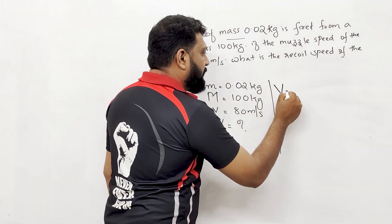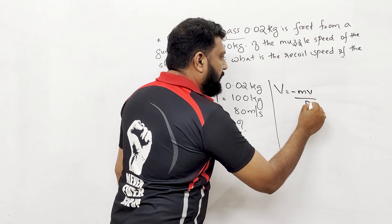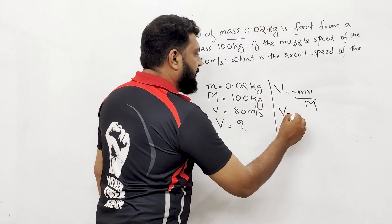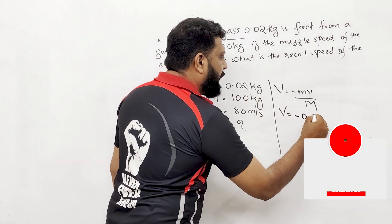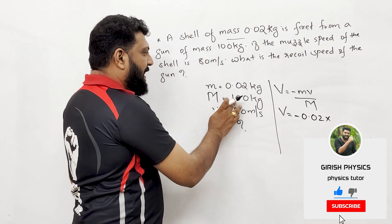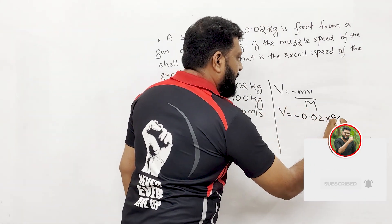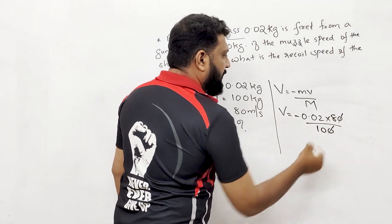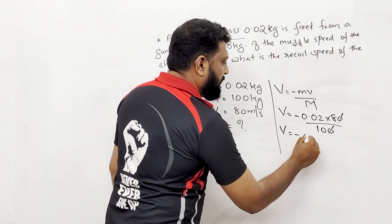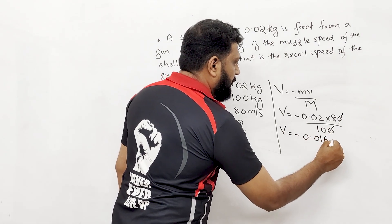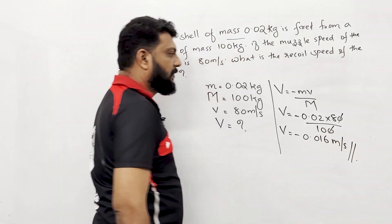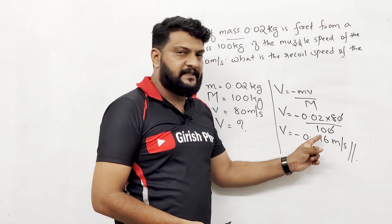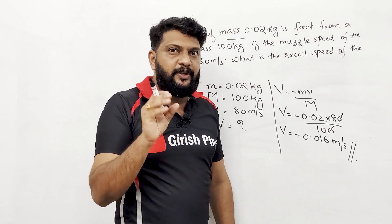Capital V is equal to minus mv divided by M. The recoil velocity works out to minus 0.016 metres per second. The unit is metres per second.